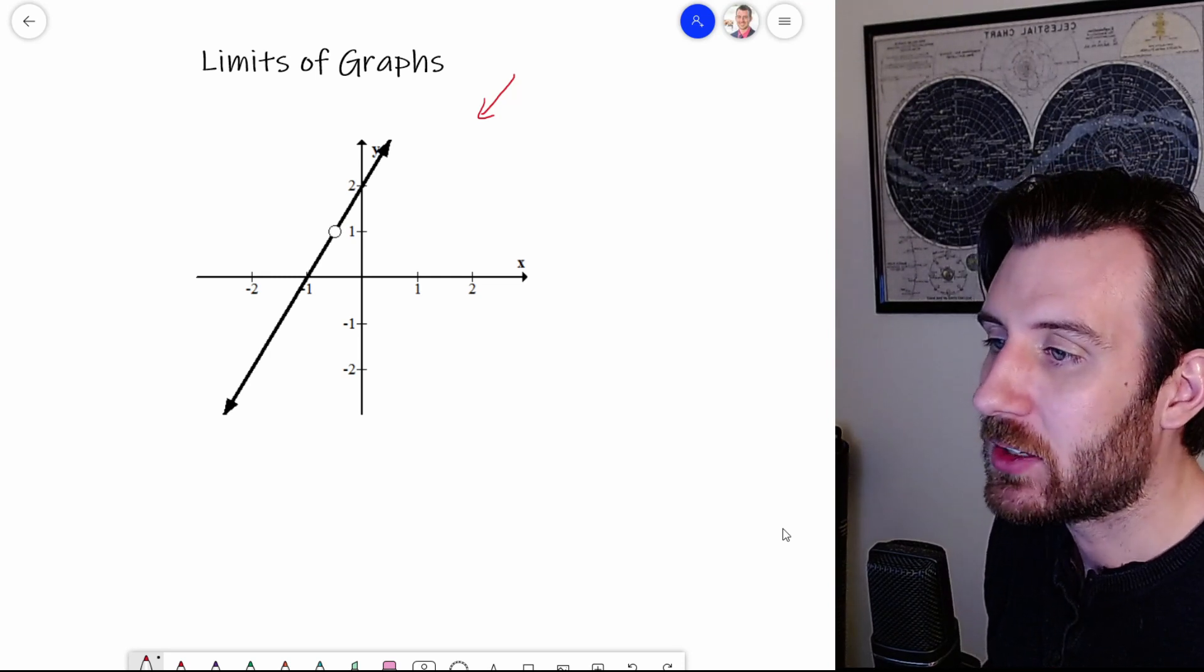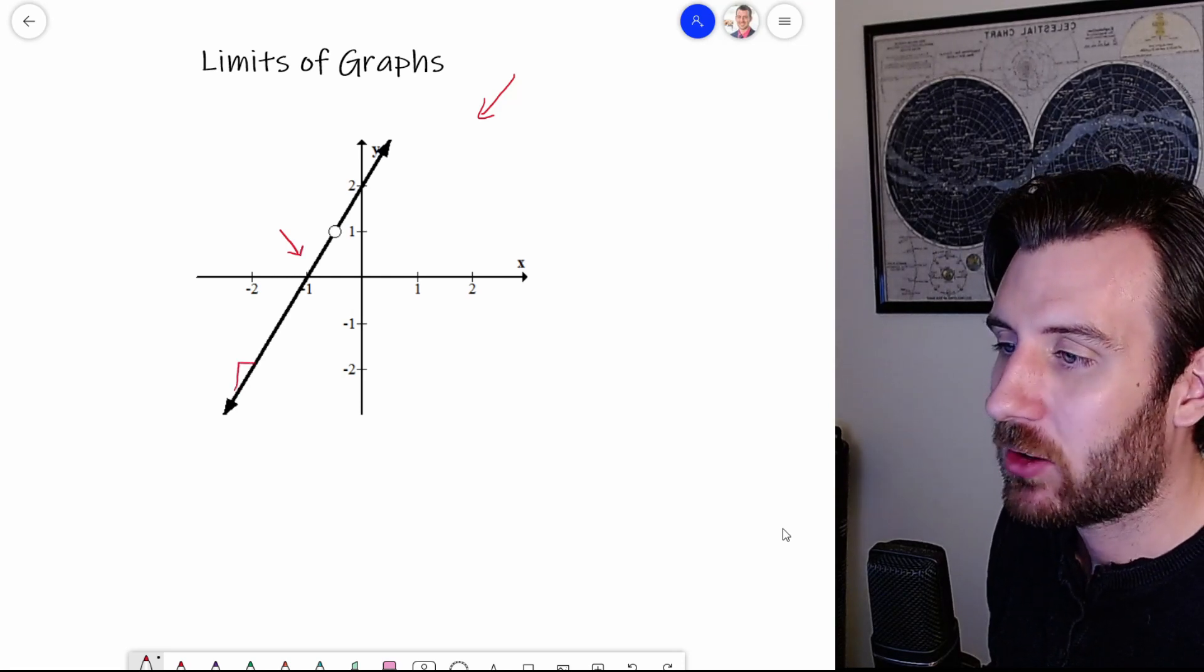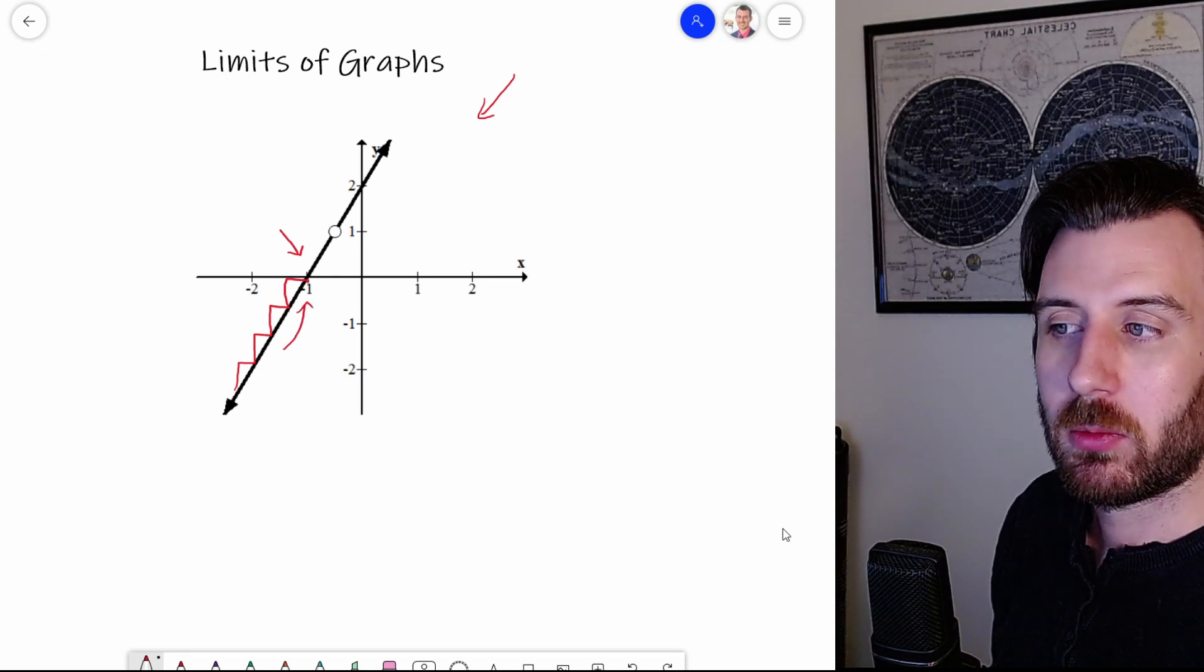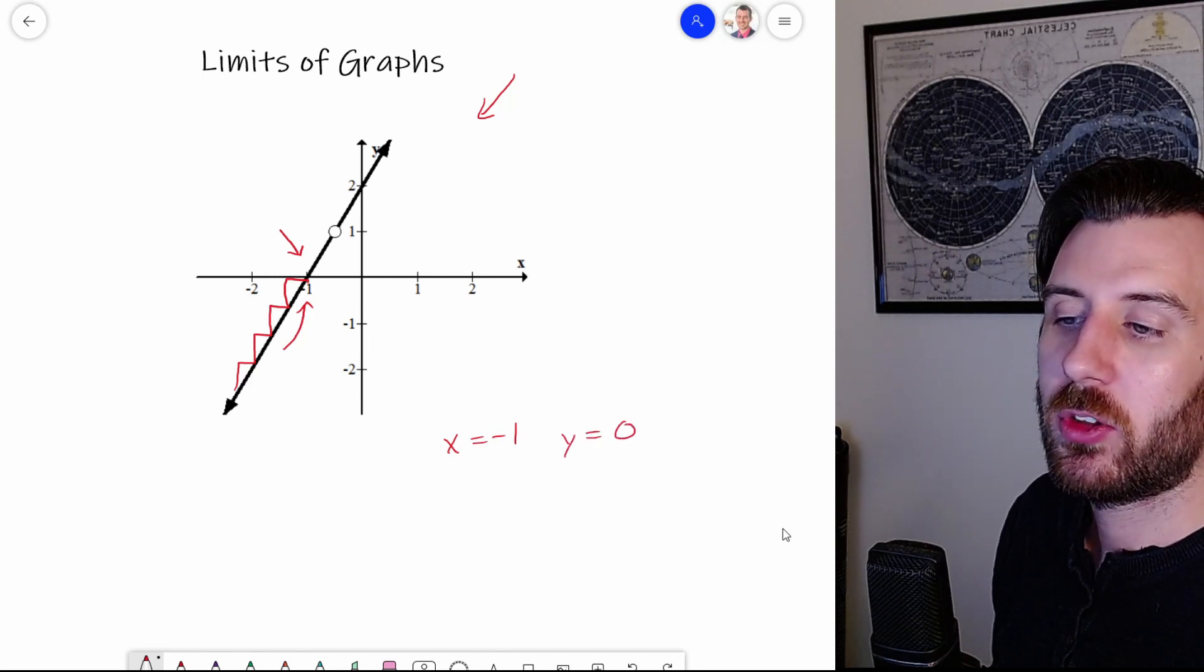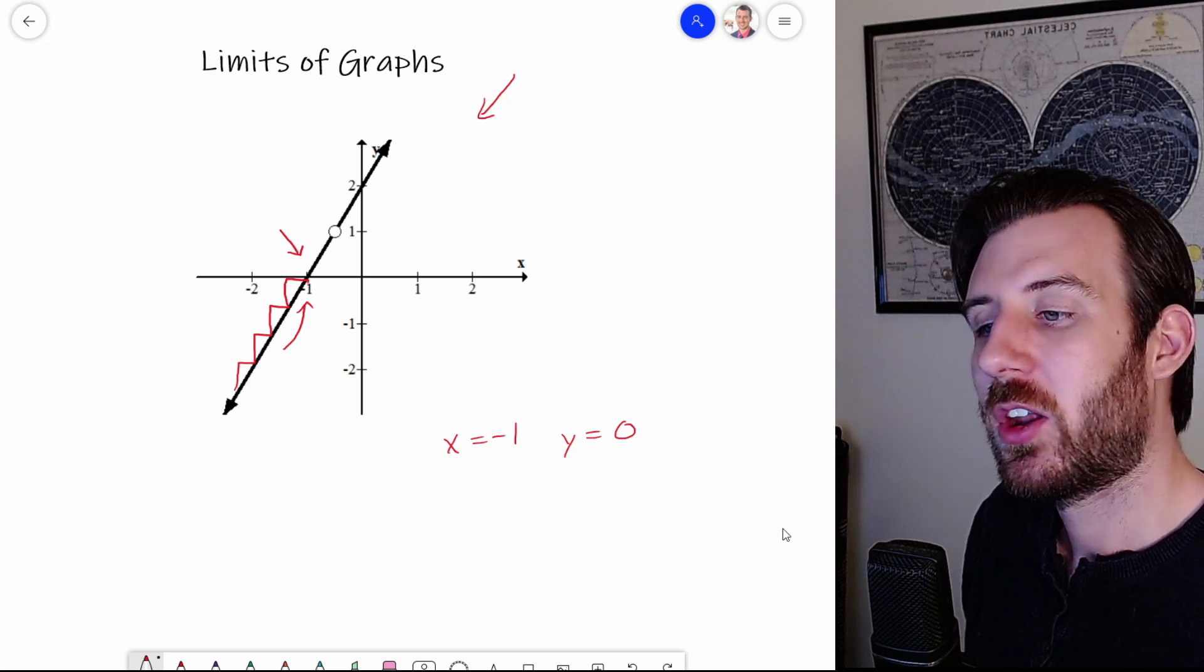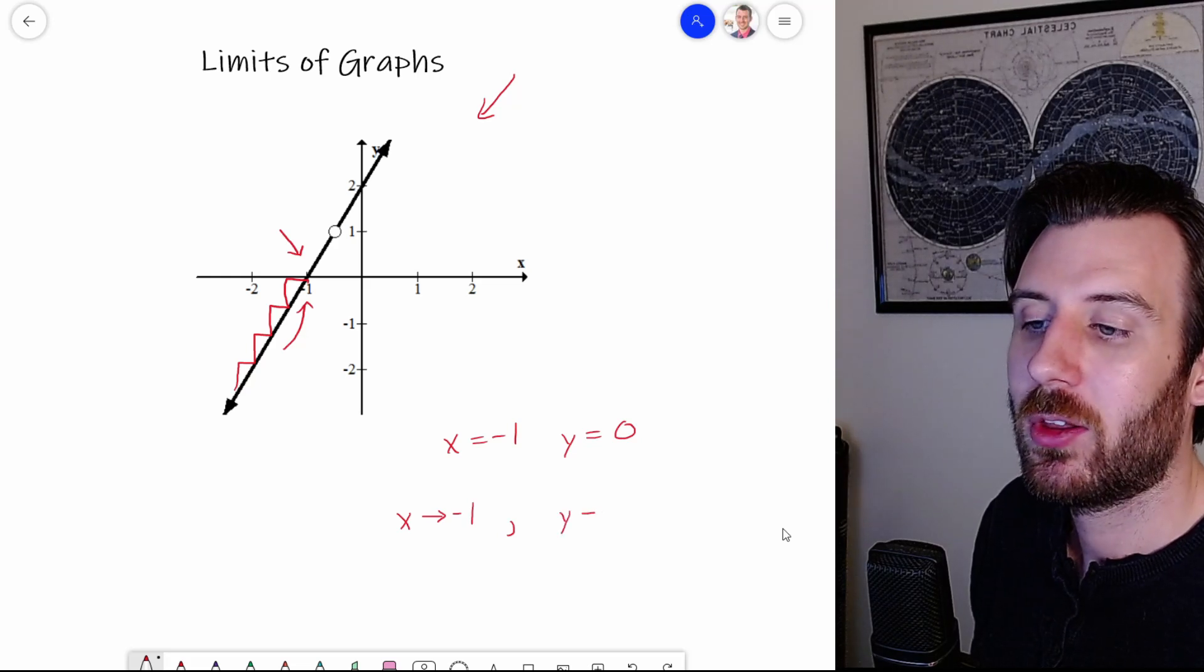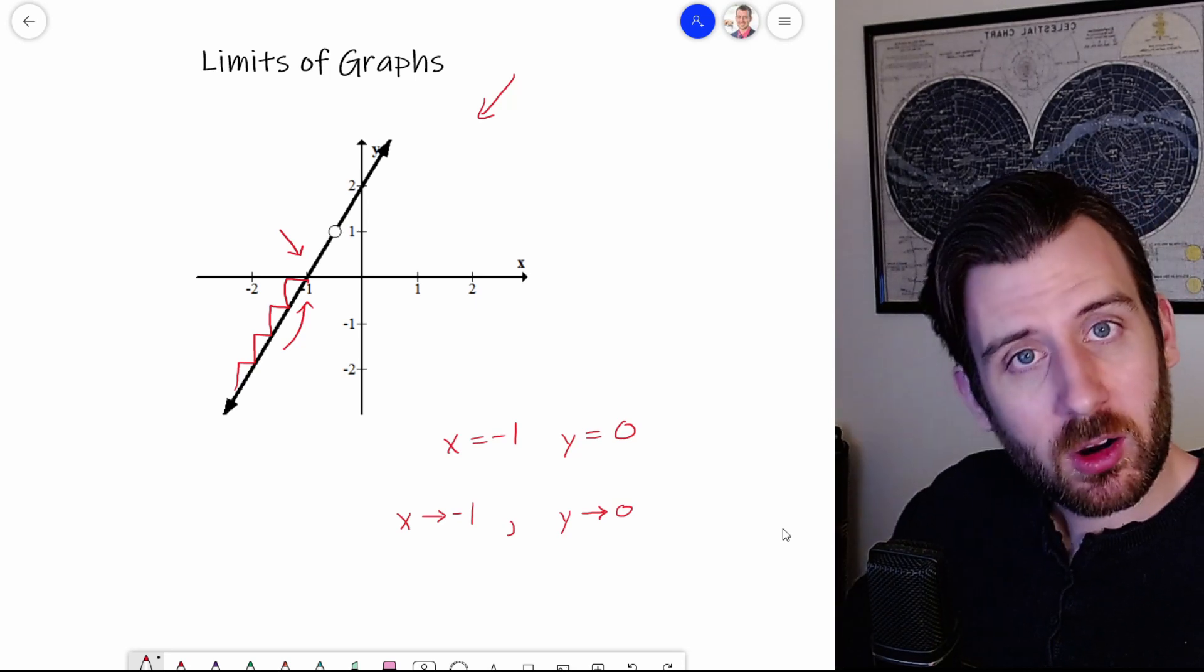So first, let's start with an easy example. Let's use an x value of negative one. And we're going to draw a little staircase here. And we're going to say, as I get close to negative one, where did I expect to approach? And we could say that I expected to approach a height of zero. So at an x value of negative one, the height of this graph was equal to zero. But that wasn't what we said, we said the approach. So in other words, as x gets closer to negative one, then y gets closer to zero. So zero is our limiting value. And it's also our actual value.